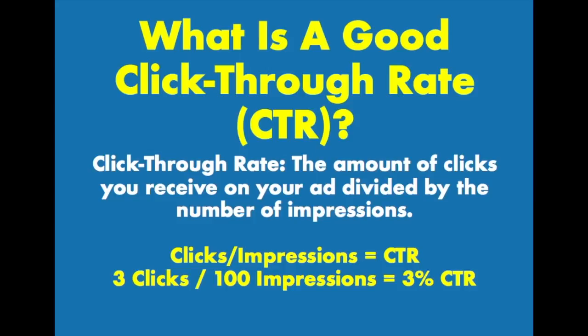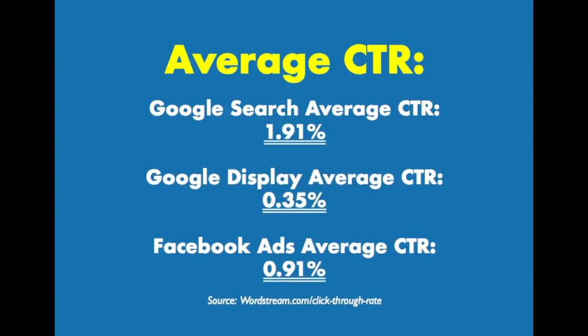The average click-through rate basically entirely across the board: for Google Search the average click-through rate is 1.91%, for Google Display the average click-through rate is 0.35%, and for Facebook Ads the average click-through rate is 0.91%. We sourced this all from wordstream.com/click-through-rate.